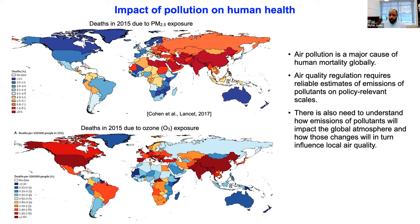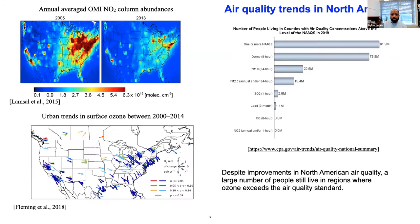From an air quality perspective, to develop effective air quality regulation strategies we need reliable estimates of emissions of pollutants on policy-relevant scales. There's also a need to understand how emissions will impact the global atmosphere and how those changes will in turn influence local air quality. In North America, for example, we've seen significant improvements in air quality as a result of regulations. The plot on the top left shows measurements of NO2, a precursor gas to ozone.